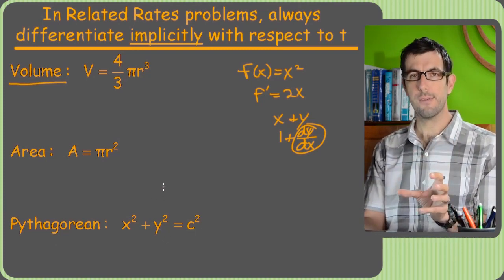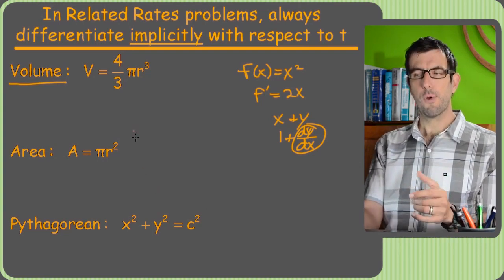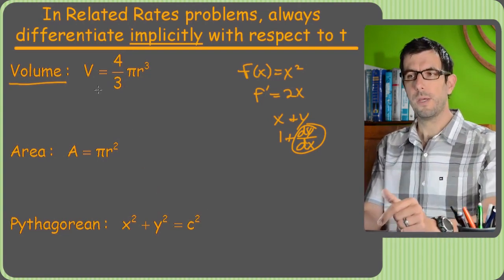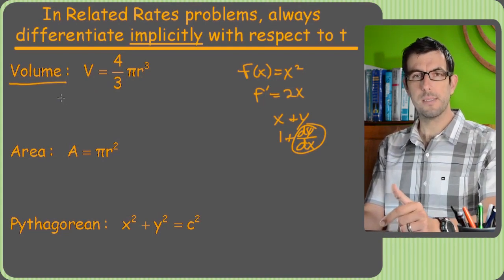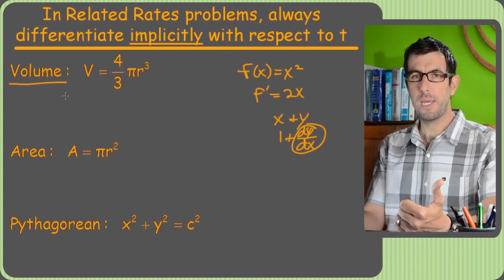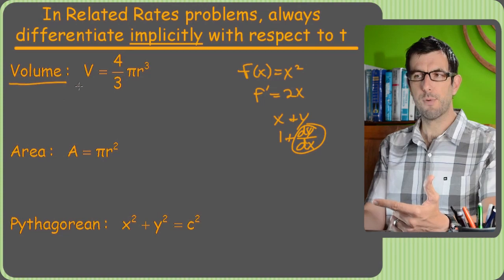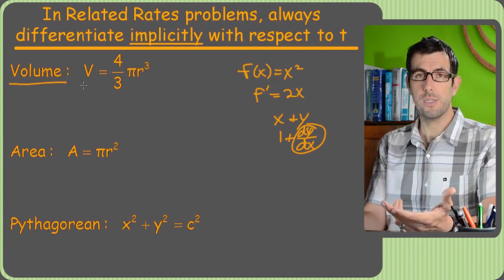And yet for this section only, for related rates problems, we're always going to take derivatives of these things in terms of t, which is kind of wacky. But what that means is that all those letters I showed you on the previous page, you're going to have to write down next to these things, just like it was implicit differentiation again.